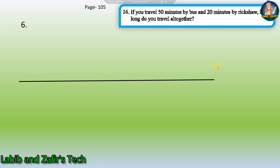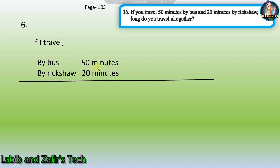This is our last word problem of today's video. If you travel 50 minutes by bus and 20 minutes by rickshaw, how long do you travel altogether? Here we have to add 50 and 20. If we add then we get 1 hour and 10 minutes, because 50 plus 20 equals 70 minutes and 60 minutes equals 1 hour. If we subtract 60 from 70 we get 1 hour and remaining 10 minutes.